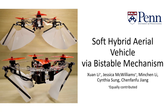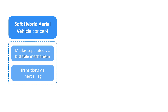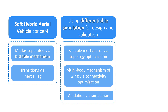We propose a novel hybrid aerial vehicle design that can switch between a quadrotor mode and a fixed-wing mode and remain in either mode in the absence of thrust. The new HAV design switches between two modes without adding actuators to the quadrotor by leveraging a compliant bistable mechanism and the inertia of the battery. Our vehicle is automatically optimized via a differentiable elasticity simulation.